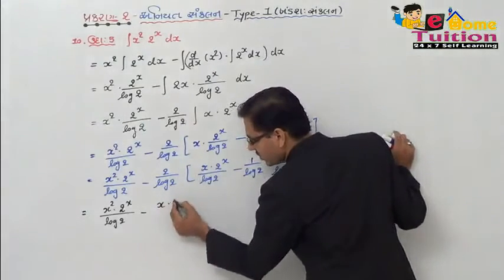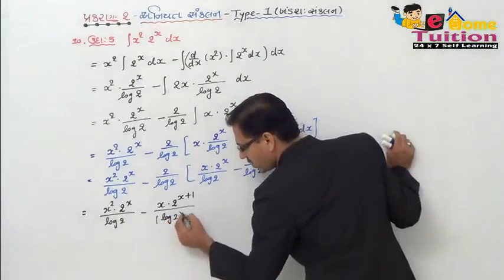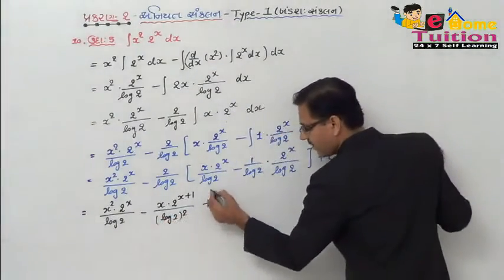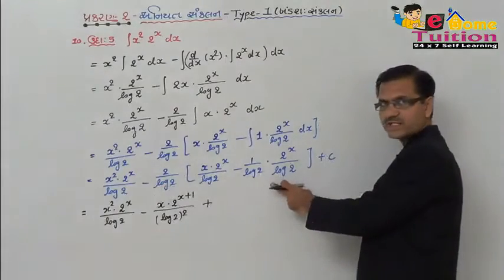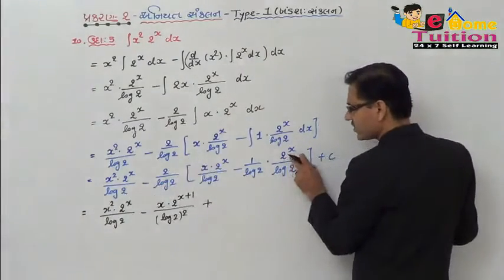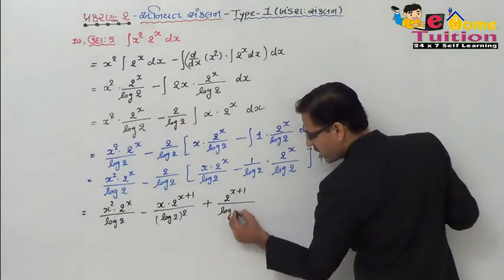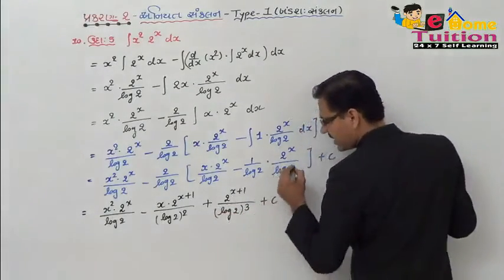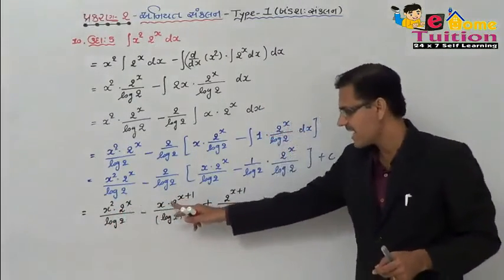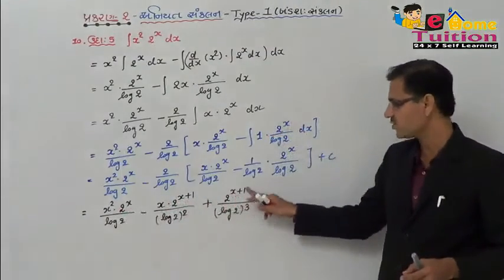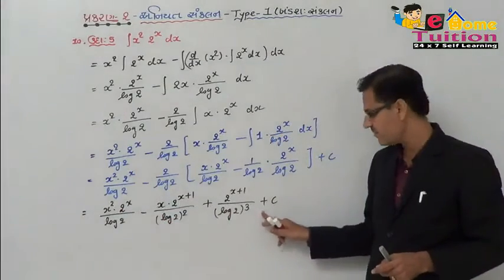x into 2 raise to x plus 1 upon log 2 whole square. minus minus plus log 2 and 2 log 2, and log 2 cube plus c.